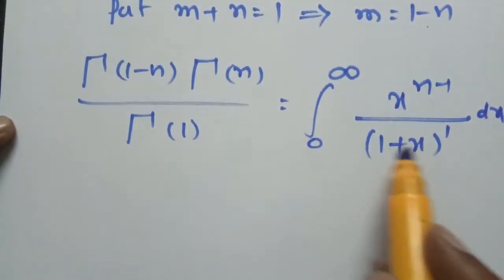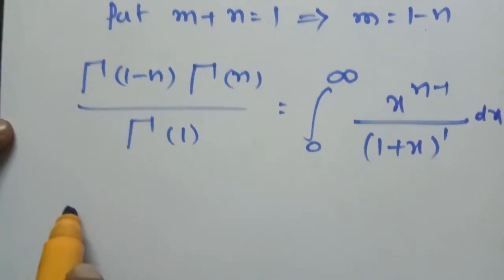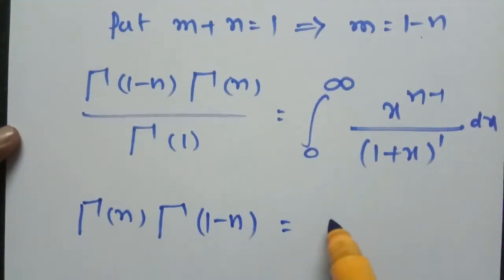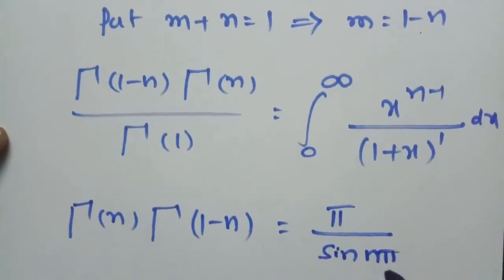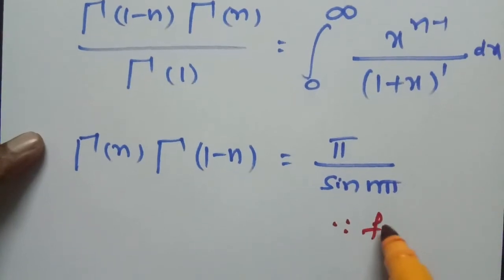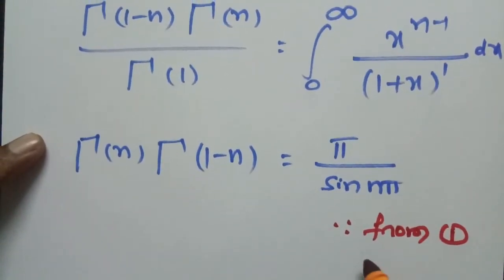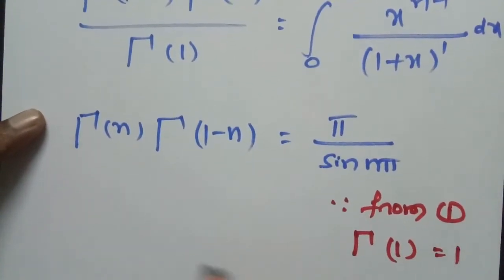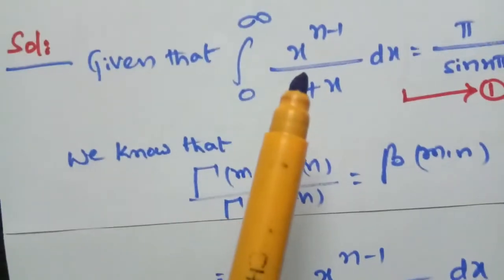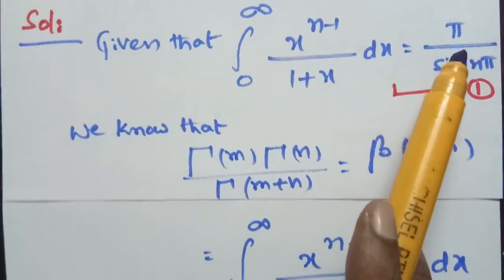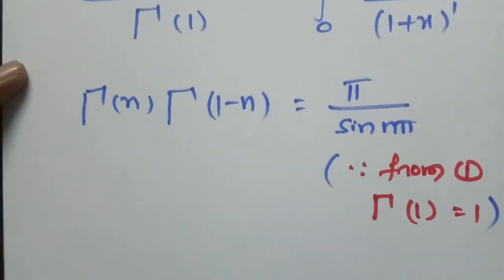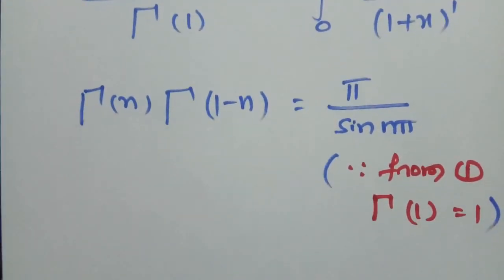We assumed that m plus n equals 1, so by equation number 1 this value equals pi divided by sin(n·pi). Therefore gamma(n) times gamma(1 minus n) equals pi divided by sin(n·pi), since from equation 1 and gamma(1) equals 1, we substituted this value, giving gamma(n) times gamma(1 minus n) equals pi by sin(n·pi). This is our required answer.